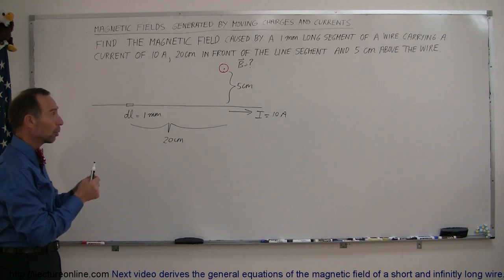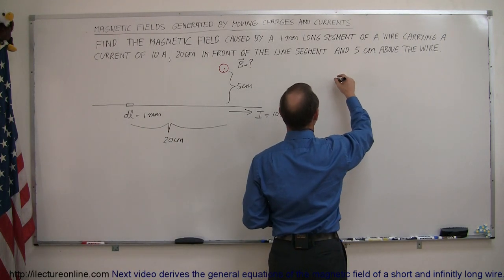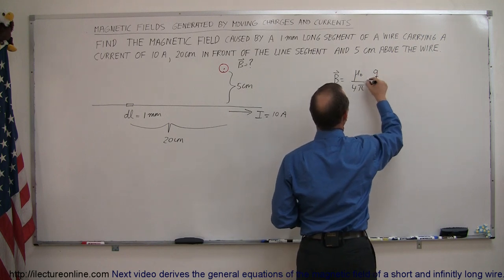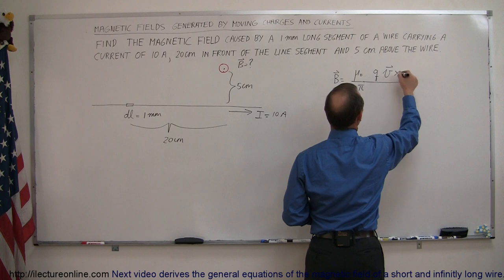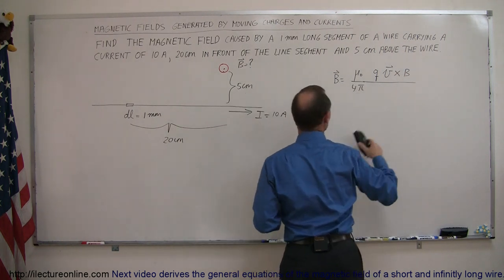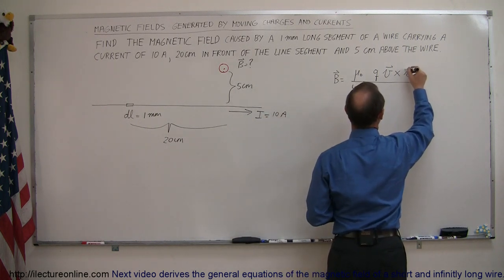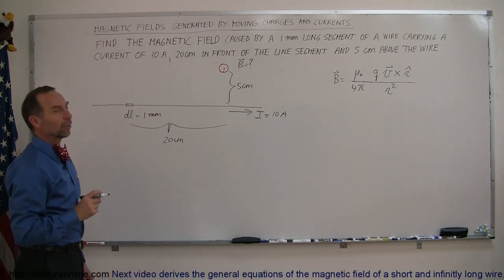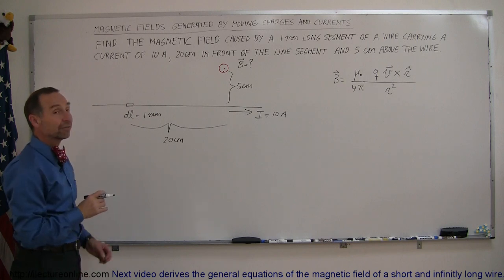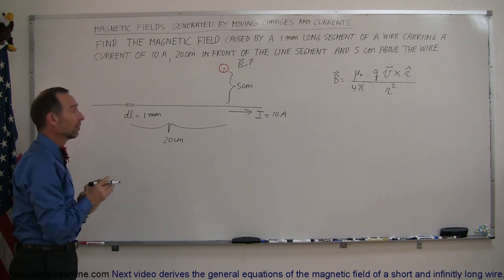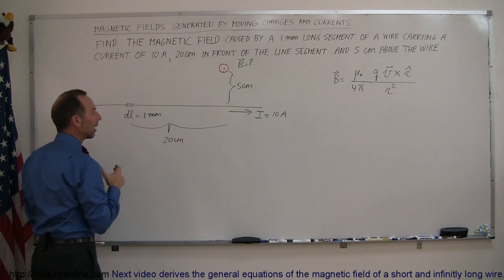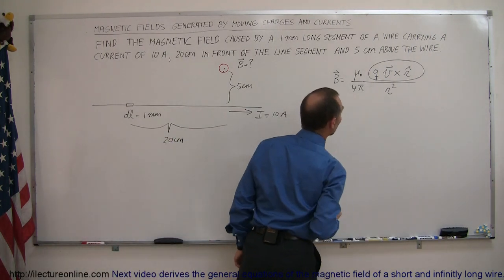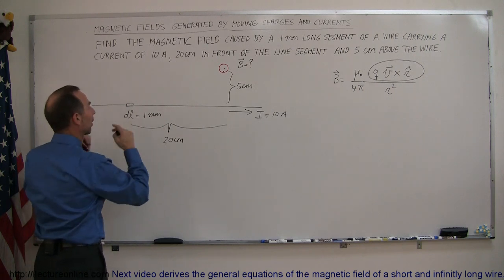Starting with the equation for single point charges, we can say that the magnetic field B is equal to mu-naught divided by 4π, times the size of the charge, multiplied by the velocity cross the unit vector r̂, divided by r squared. Now we're not given the velocity of the charges or the size of the charge — we simply have a section of DL. So we have to convert that equation: how much charge is being carried by this section, and how do we figure that out?